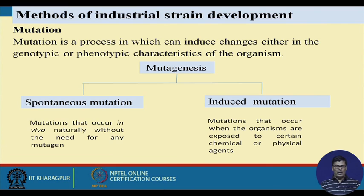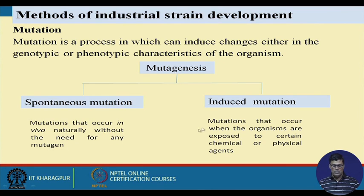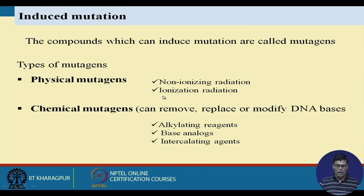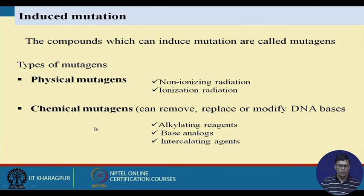Mutation can induce genotype or phenotype changes and may be of two types: spontaneous mutation, which occurs in vivo naturally without any mutagens, and induced mutation, which occurs when organisms are exposed to certain chemicals or physical agents. There are different types of mutagens: physical mutagens include non-ionizing and ionizing radiation; chemical mutagens include alkylating agents, base analogs, and intercalating agents.